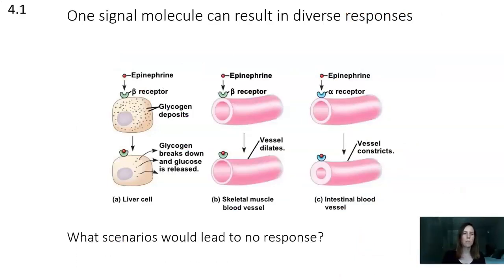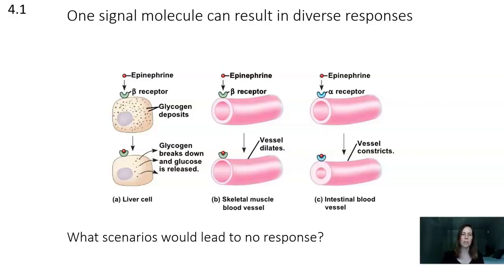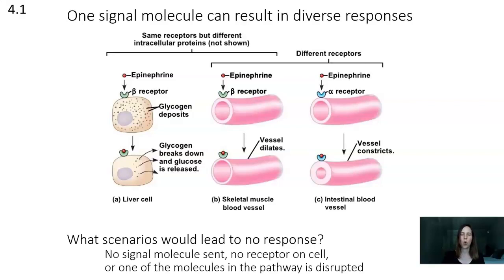An important concept is that a single signal molecule can result in a wide variety of responses. In this diagram we have a liver cell, a skeletal muscle blood vessel, and an intestinal blood vessel. Look at how the signals and responses are similar and different in each case, and think about what scenarios might lead to a complete lack of response.